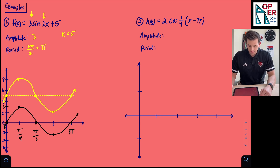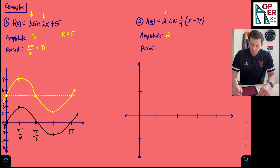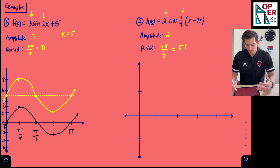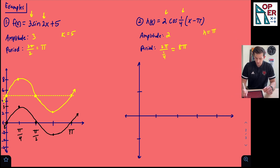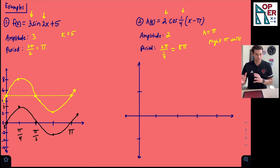Now let's move on to number two: h of x equals two cosine of one-fourth times x minus pi. Our amplitude is two, and b is one-fourth. So the period is two pi divided by one-fourth, which equals two pi times four — so eight pi is our period. We see x minus h in parentheses, so h equals pi, which means we're going to shift to the right pi units.